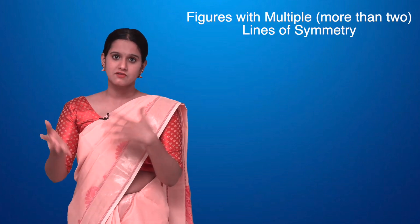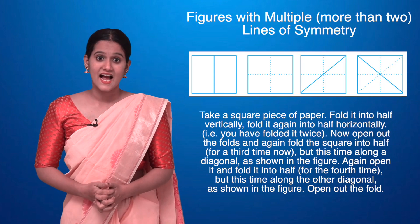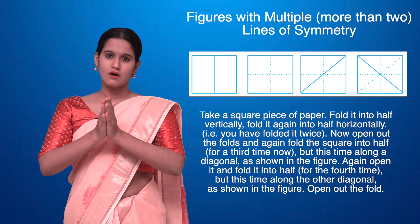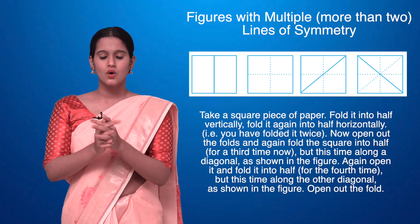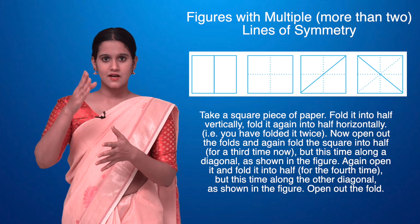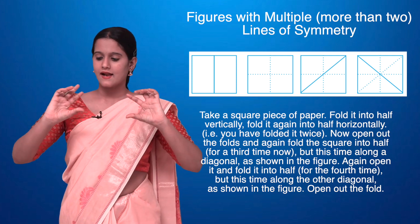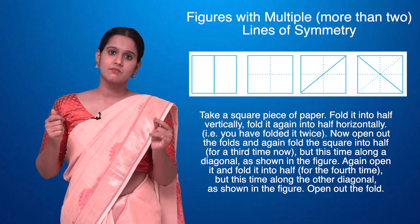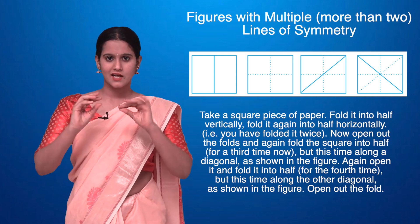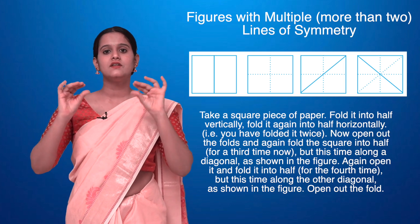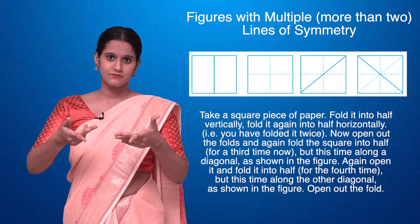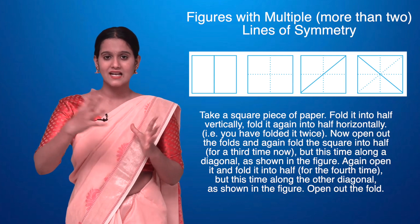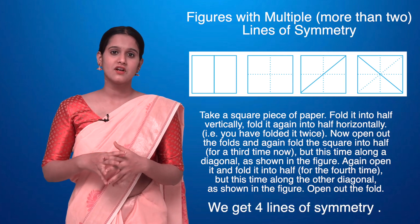Now let's see a figure with more lines of symmetry. I'll take a piece of paper in the form of a square. I'll fold it vertically — there is one line of symmetry. Then I'll fold it horizontally — now I have two lines of symmetry. I'll open it back up.